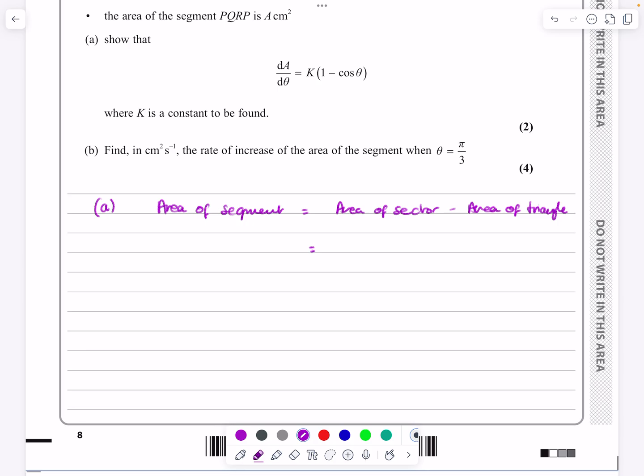So the area of a sector is half R squared theta, and the area of a triangle is half BC sine A, but whichever version of that you've got. Within the half BC sine A, half R squared theta, in this case B and C are both R, so it's half R squared, and A is theta there. So the area of the segment that we want is going to be half R squared theta minus half R squared sine theta.